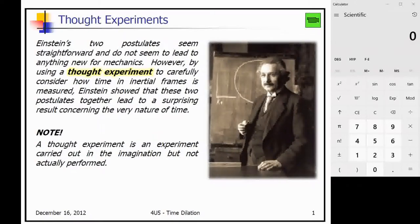Going back to those two postulates of the special theory of relativity, while they seem pretty straightforward and don't really seem that spectacular, what is interesting is when we consider what happens as we move closer and closer to the speed of light. Einstein performed what we call thought experiments — an experiment carried out in the imagination but not actually performed.